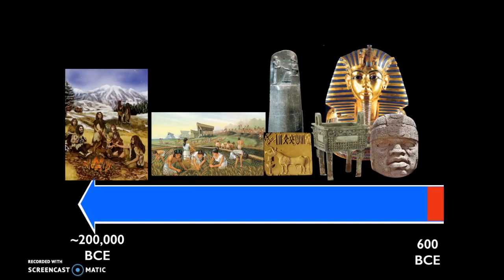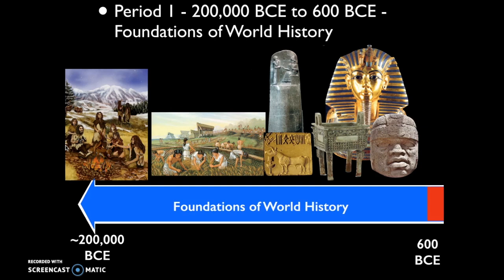We'll begin the course with Period 1, the Foundations period, from roughly 200,000 BCE to 600 BCE. For the first 190,000 years of human existence, humans lived as hunter-gatherers. They migrated across the various continents, starting in Africa and eventually spreading out to Eurasia, Australia, and the Americas. About 10,000 years ago they settled down, forming sedentary communities as a result of the Agricultural Revolution, or the Neolithic Revolution. They eventually created more complex societies — civilizations — like ancient Egypt, Mesopotamia, the Shang and Zhou dynasties in China, the Indus River Valley civilization, and the Olmec and Chavin in the Americas.